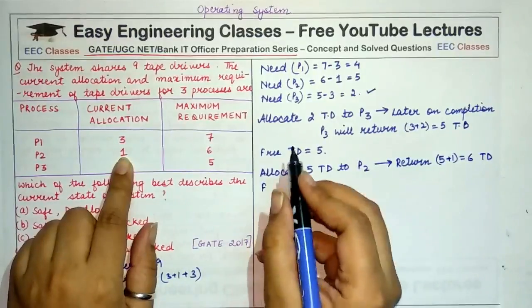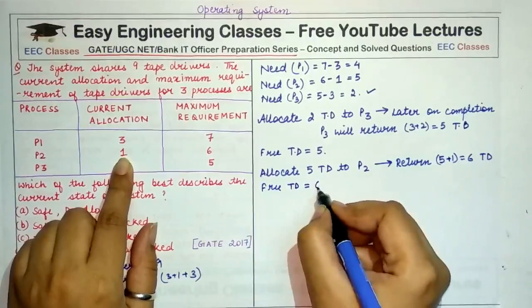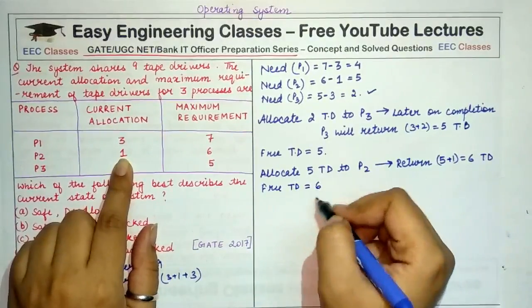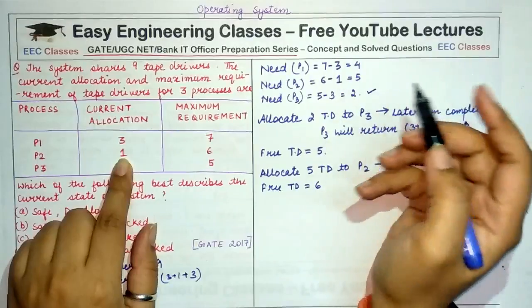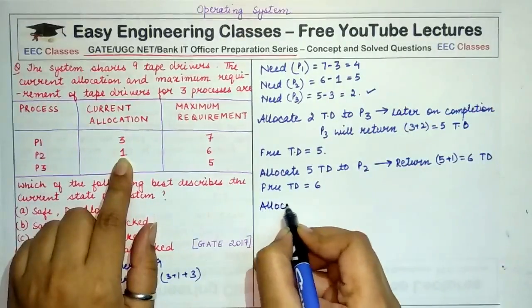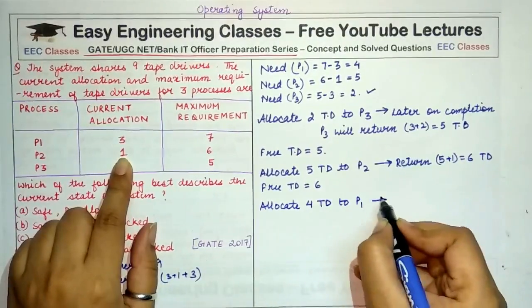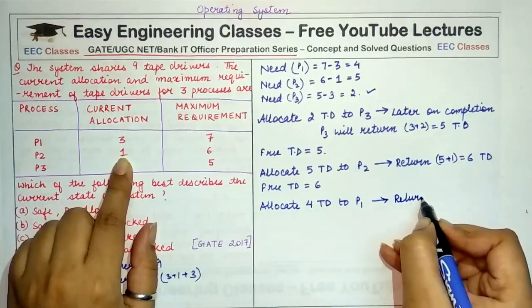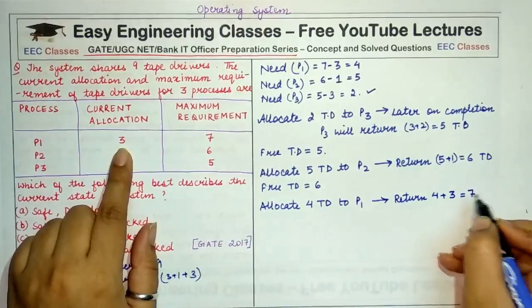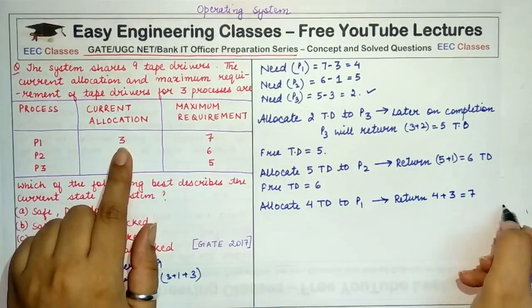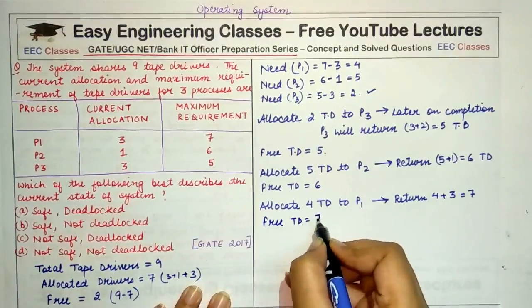So after P2's completion, total free tape drivers that are left with me are 6 in number. Now, total I have 6 tape drivers and P1 needs 4 tape drivers to complete. So allocate 4 drivers to P1 for its completion and when P1 completes, it will return these 4 along with the 3 that were allocated to it. That means it will return all the 7 tape drivers and now we are left with free tape drivers equal to 7.